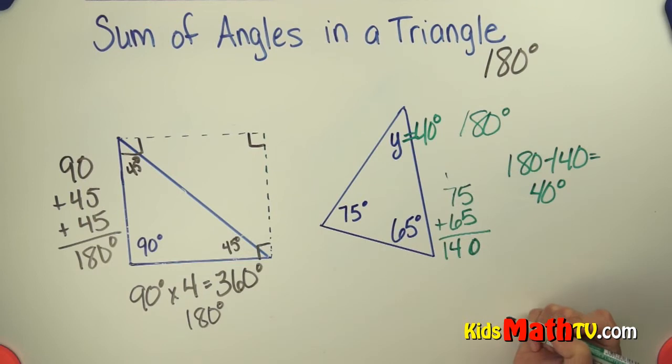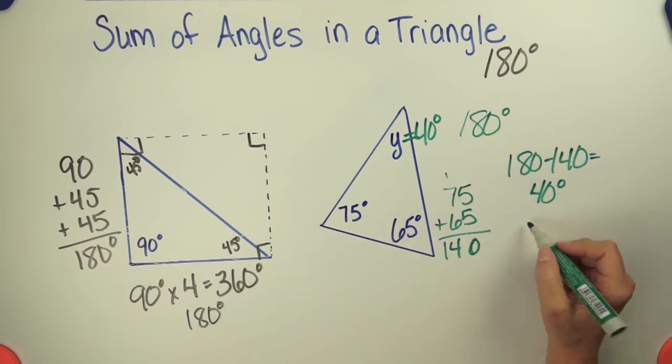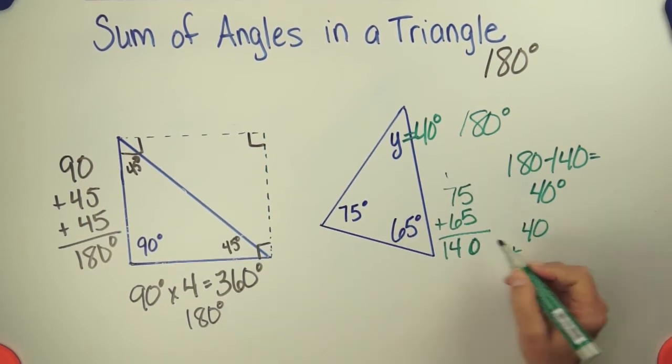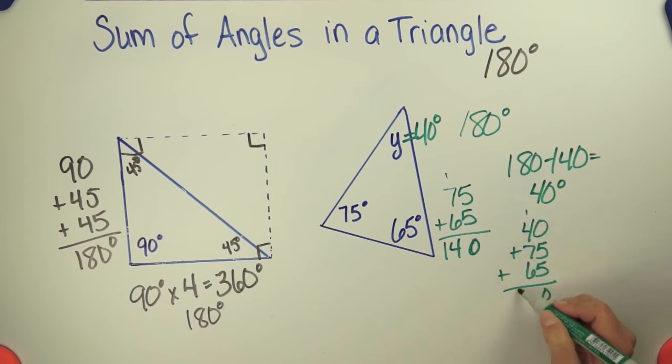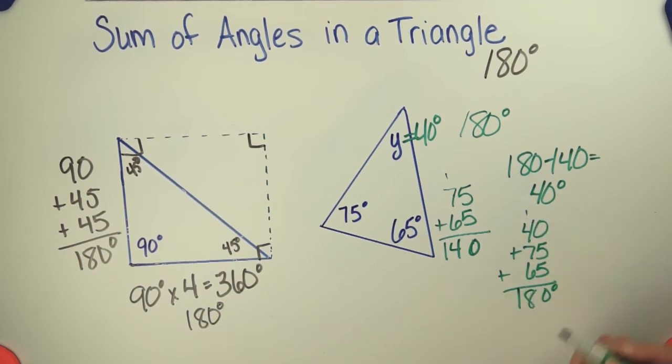Because the whole thing is 180 degrees. If we add them all up, 40 plus 75 plus 65, that equals 180 degrees.